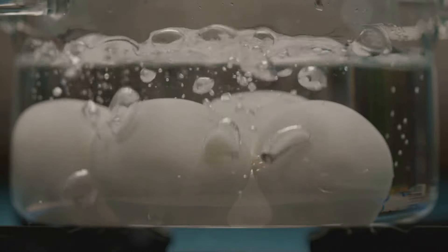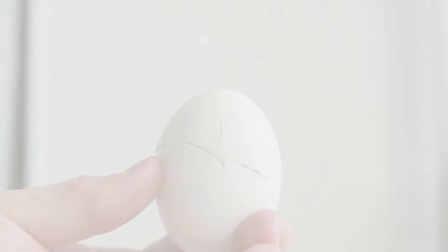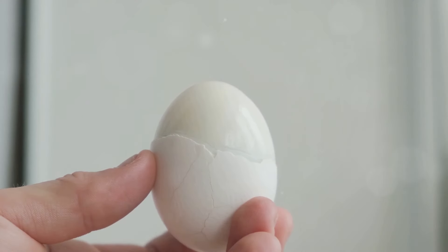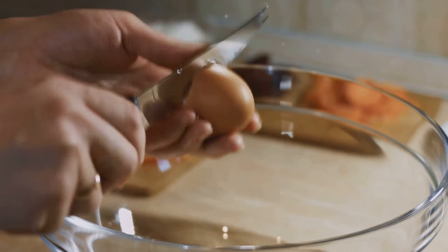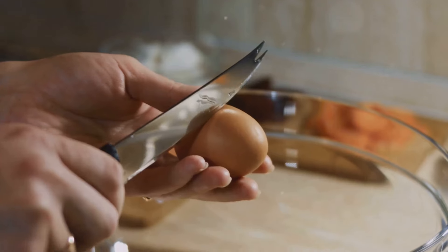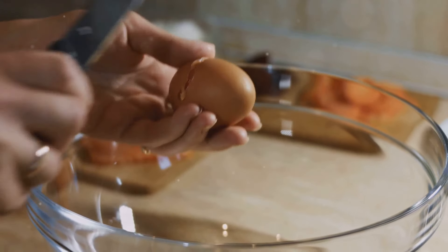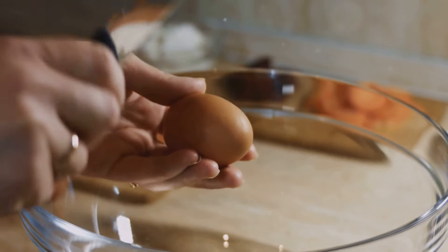Now let's look at some tips for easy peeling. Use older eggs. As mentioned earlier, older eggs peel more easily than fresh ones. Shock in ice water. Immediately place boiled eggs in an ice bath for at least five minutes. Then roll and peel. Gently roll the egg on a hard surface to crack the shell, then peel starting from the wider end.